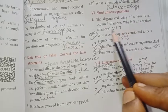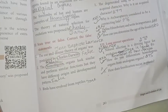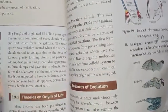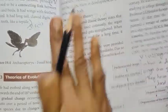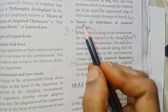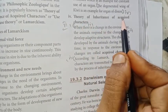Page number 277, answer. First: the use and disuse theory — also known as the theory of inheritance of acquired characters, proposed by Lamarck.